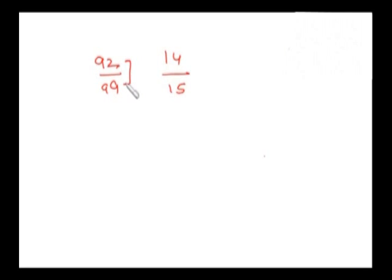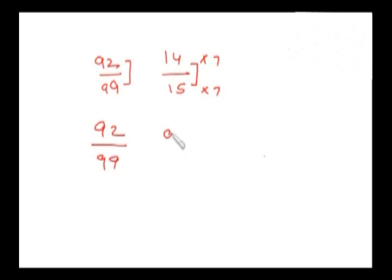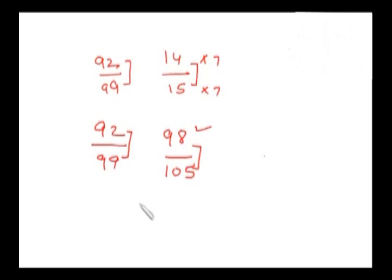Between 92 and 99 there is a difference of 7. In the case of 14 by 15, the difference between numerator and denominator is 1. Now I can make this difference 7 by multiplying the numerator and denominator by 7: 14 into 7 gives 98 and 15 into 7 gives 105. Now in both cases the difference is 7, so the fraction with the higher numerator is higher. Since 98 is greater than 92, 14 by 15 is greater than 92 by 99.